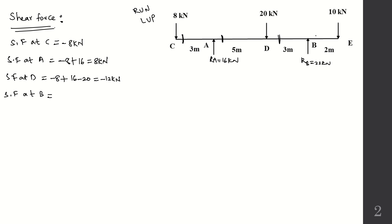Shear force at B, calculating from the left: −8 + 16 − 20 + 22 = +10 kN. Alternatively, from D: shear force at D is −12, then add RB = 22, giving −12 + 22 = +10 kN. Shear force at B = +10 kN.